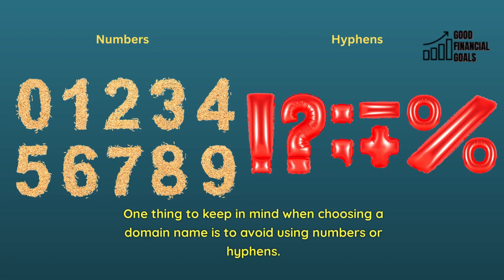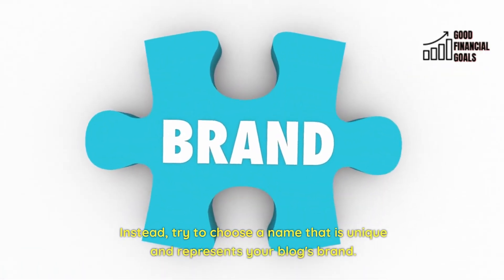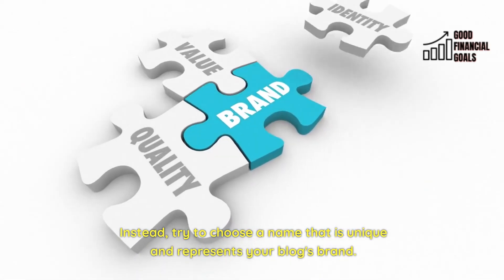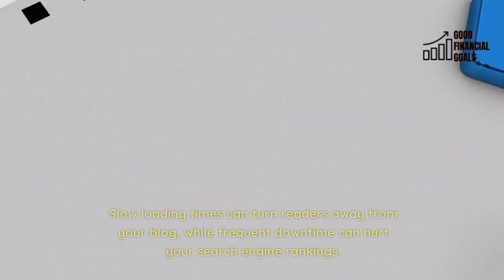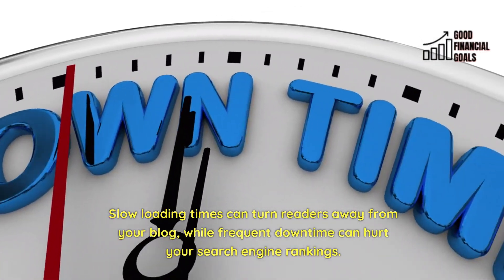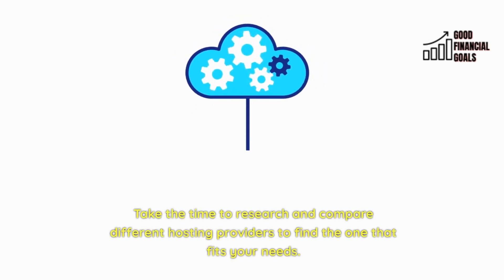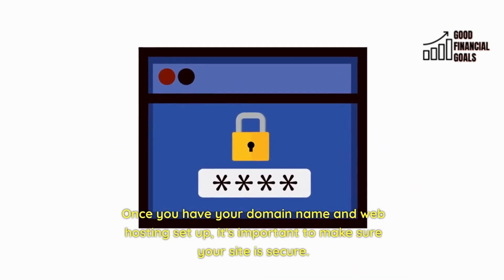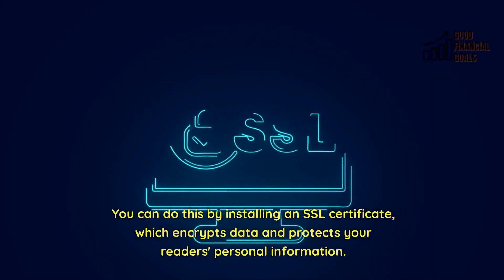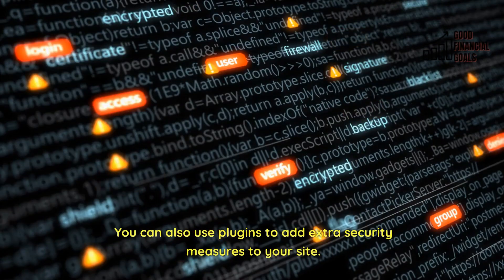When choosing a domain name, avoid using numbers or hyphens, as this can make it harder for people to remember your blog's web address. Instead, try to choose a name that is unique and represents your blog's brand. When it comes to web hosting, make sure to choose a provider that offers fast loading times and good uptime. Slow loading times can turn readers away, while frequent downtime can hurt your search engine rankings. Once you have your domain name and web hosting set up, make sure your site is secure by installing an SSL certificate, which encrypts data and protects your readers' personal information. You can also use plugins to add extra security measures to your site.